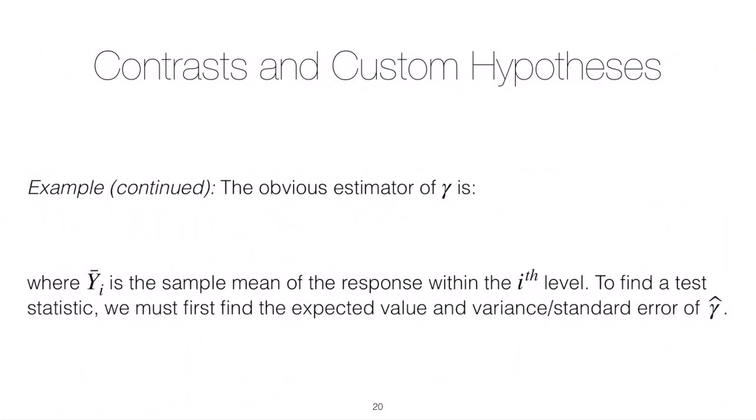Now how would we go ahead and estimate our contrast? Well the obvious choice is to substitute a sample mean for a population mean, so our estimate would look something like 0 times y0 bar, and y0 bar is the mean of the response at the 0th level of the factor, plus 1 times y1 bar plus 0 times y2 bar plus minus 1 times y3 bar.